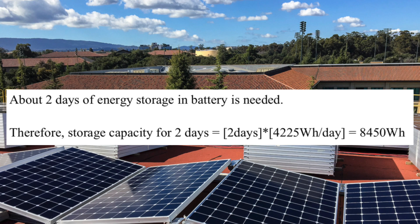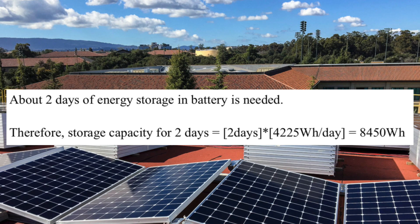In the solar system, we also need to determine the autonomy of the battery. When I say autonomy, I mean how long can a battery last if there was no external power to recharge it — for example, during a hurricane, rainfall, or one to two weeks without sun. We can decide to design a system with a battery autonomy of two days. If we have a load of 4,225 watt-hours per day and we need batteries to give us two days autonomy, the storage capacity of the batteries will be 2 × 4,225 = 8,450 watt-hours.